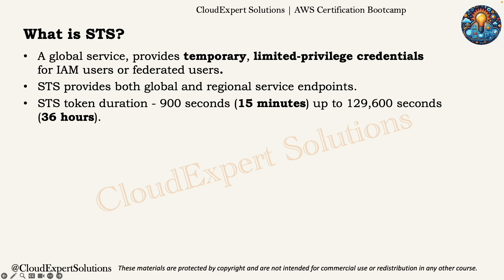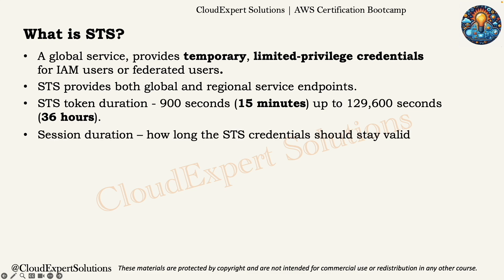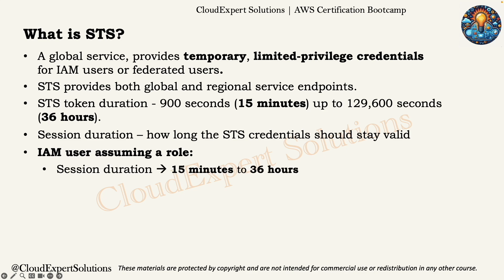AWS STS token duration can be configured between 15 minutes to 36 hours. When you use STS to get temporary credentials, you can decide how long those credentials should stay valid, which is called session duration. There are two different ways to acquire these credentials. First, if you have an IAM user assuming a role, you can set the duration anywhere between 15 minutes to 36 hours. By default, AWS sets this to 12 hours.